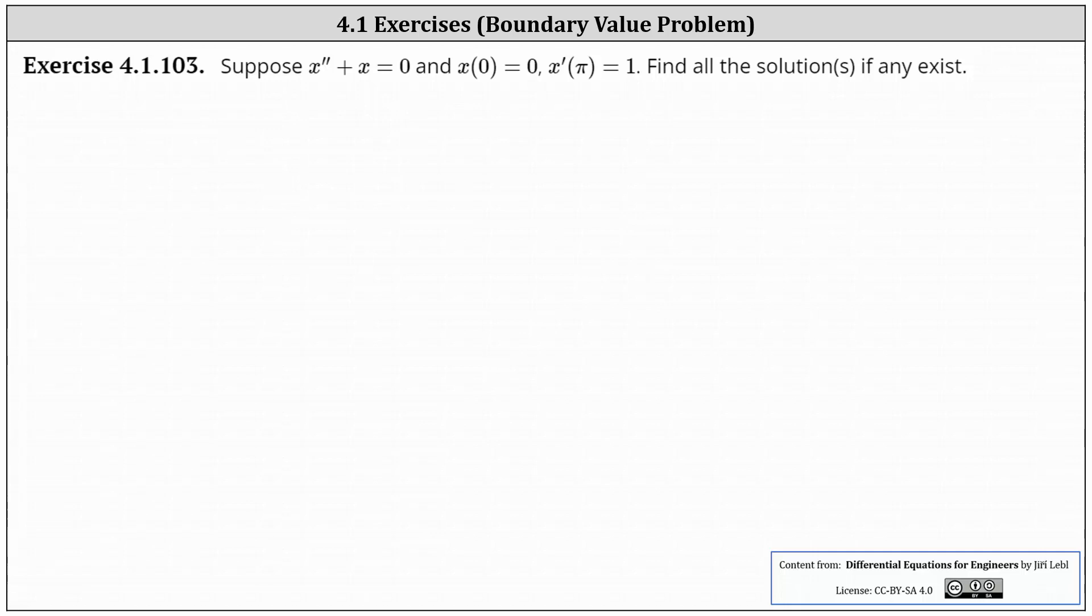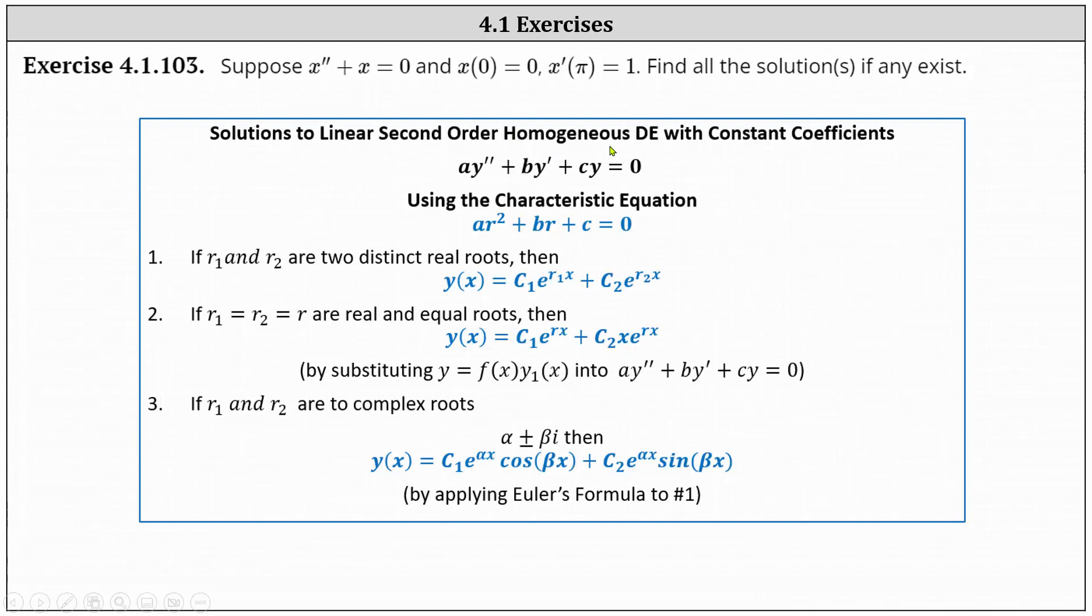We begin by determining the general solution to the differential equation. We can do this using the corresponding characteristic equation. For a quick review, when we have a linear second order homogeneous DE with constant coefficients in the form shown here, the type of roots of the characteristic equation r squared plus br plus c equals zero indicates the form of the general solution.